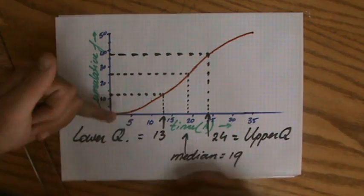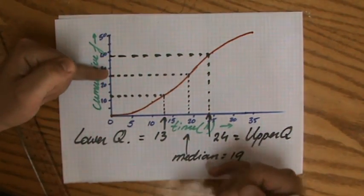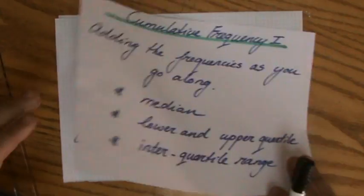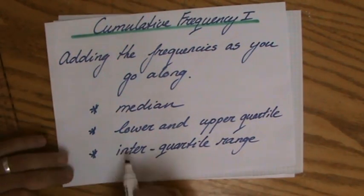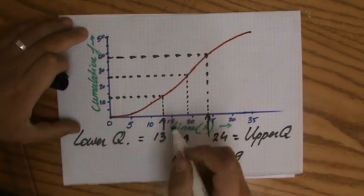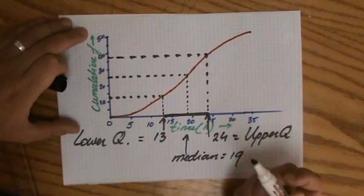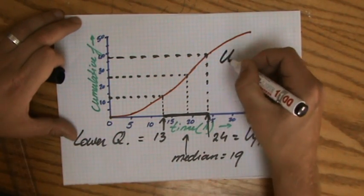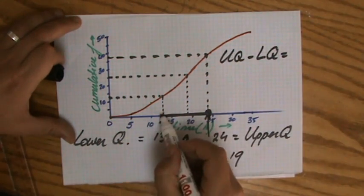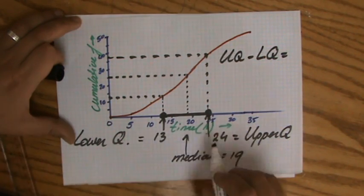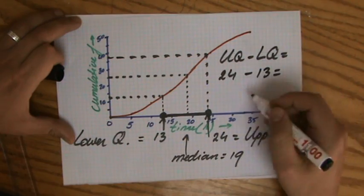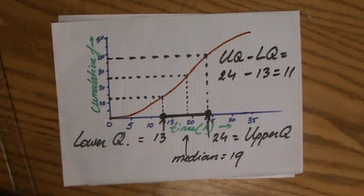And the upper quartile is 24. So we have: the lower quartile at one quarter of the values, the median exactly in the middle, and the upper quartile at three quarters of the values. The last thing is the interquartile range. 'Inter' means in between — like inter-national. The interquartile range is the upper quartile minus the lower quartile: 24 minus 13 equals 11. The interquartile range is 11.